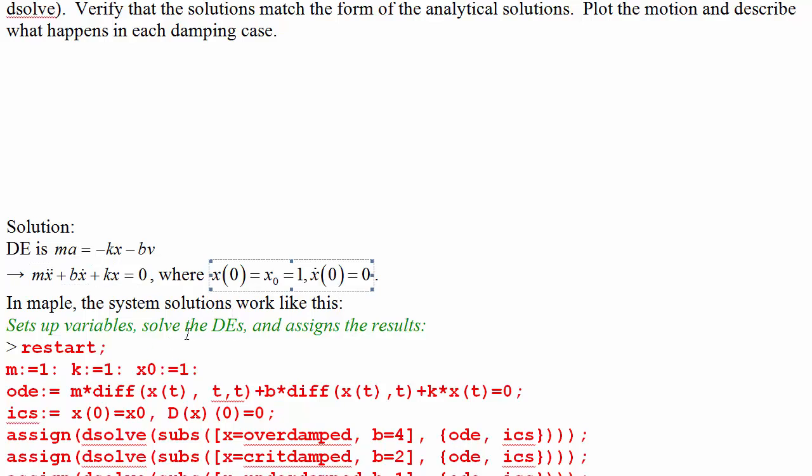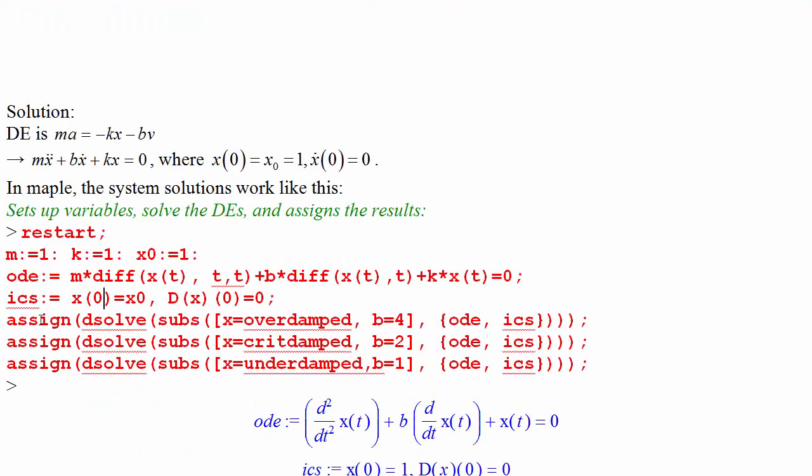Restart at the beginning to clear the variables. Set up your constants and we're not setting up b because that's going to be different. So we're going to substitute that in. The ODE is mx double dot, so the second diff with respect to t, plus bx dot plus kx is equal to zero.